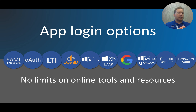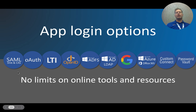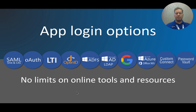We are a Google school, so 'Sign in with Google' is what we use most of the time. But some apps can't use Google sign-in because the vendor doesn't participate in that — they use LTI, SAML, or OAuth instead. This slide shows a snapshot of all the different authentication methods ClassLink supports. They're always adding to this list, and the common ones used by tech directors across the country are represented here.